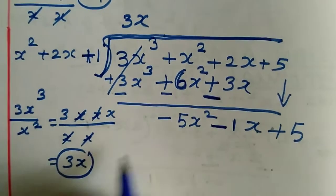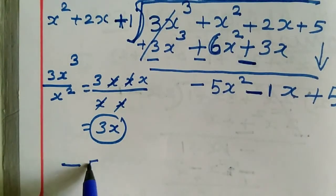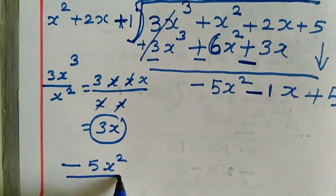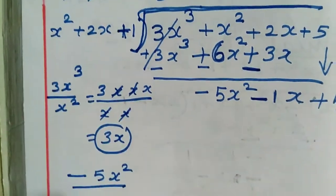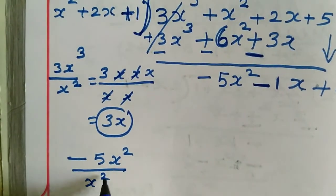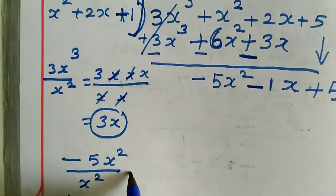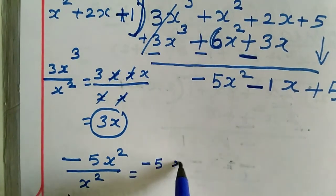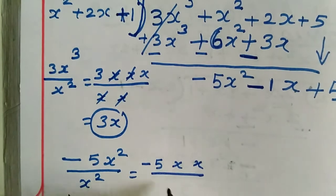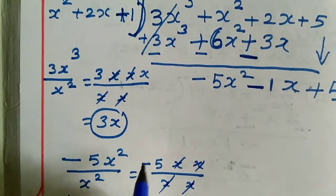-5x² is the first term. Divide by g(x)'s first term x². Cancel the x², and we get the value as -5.